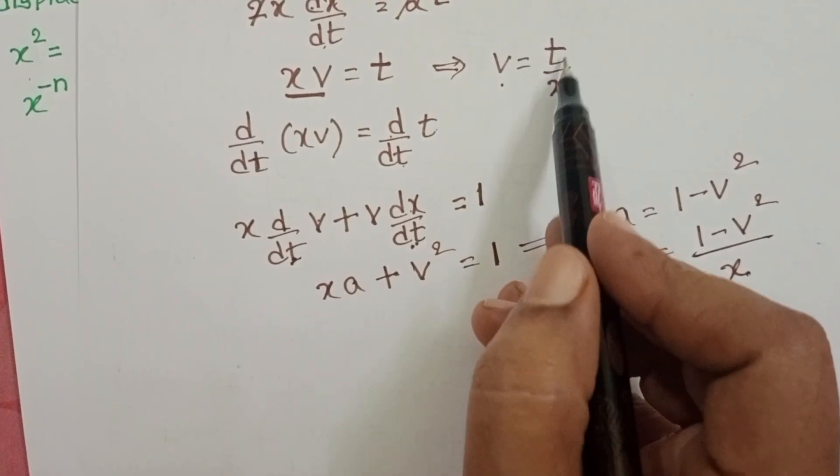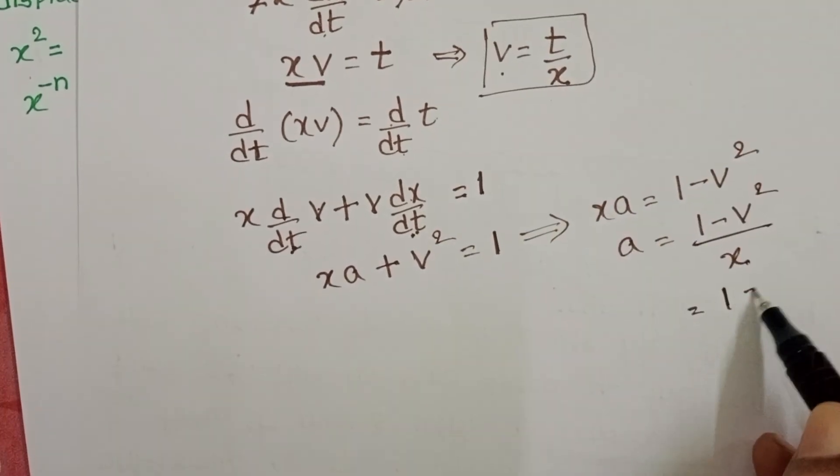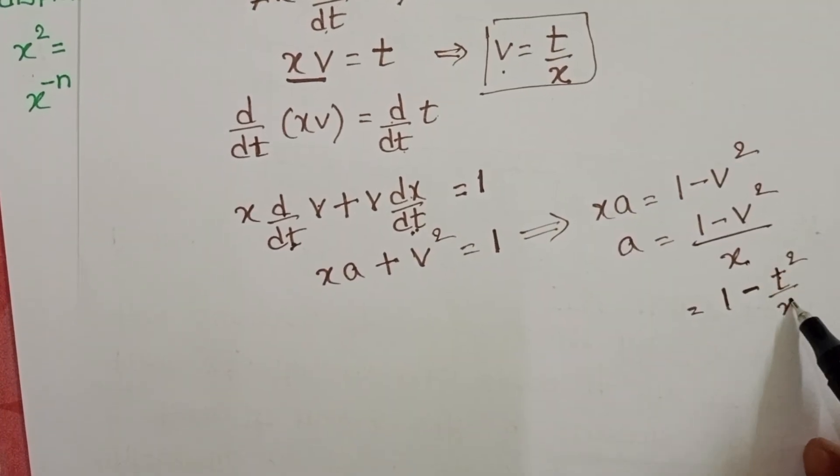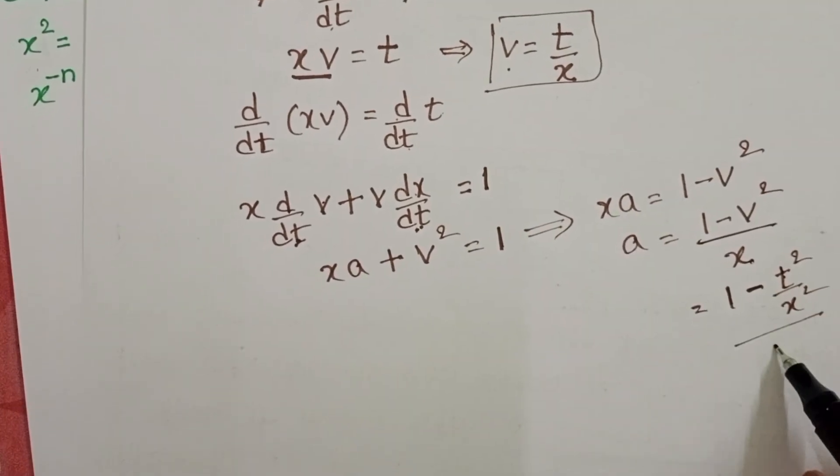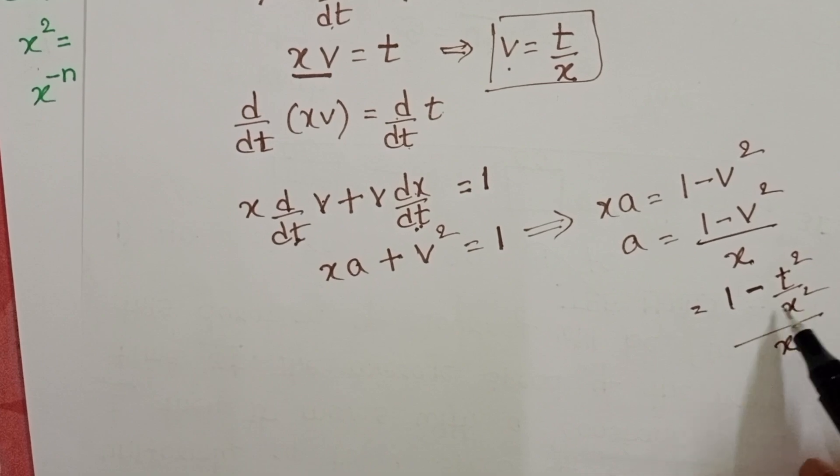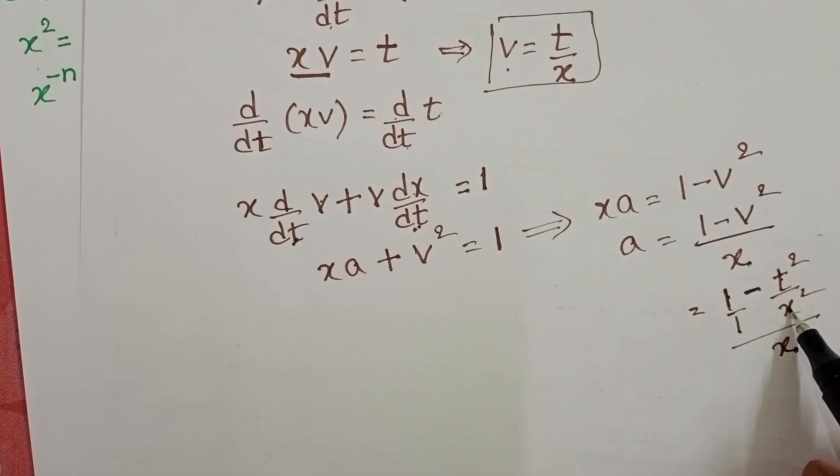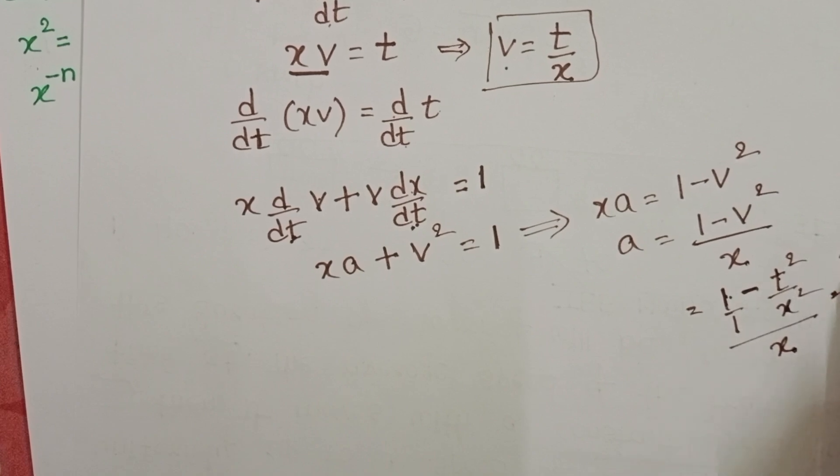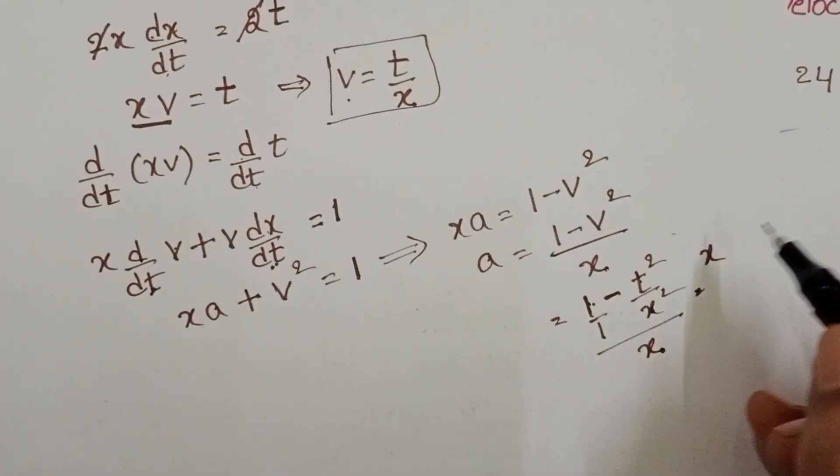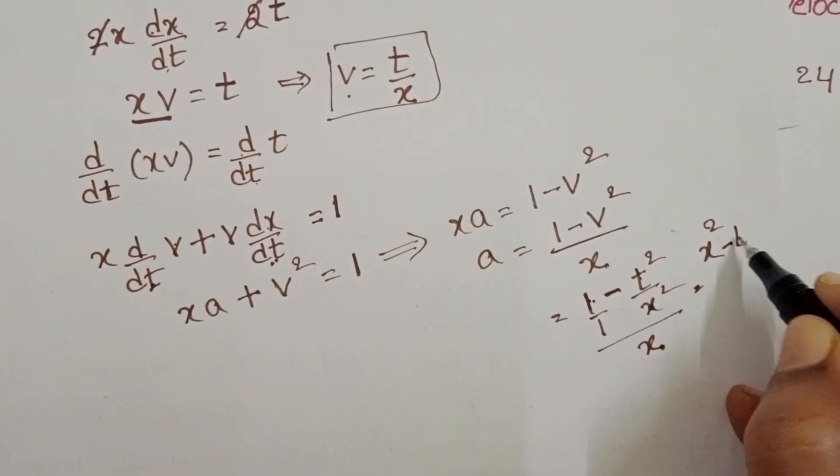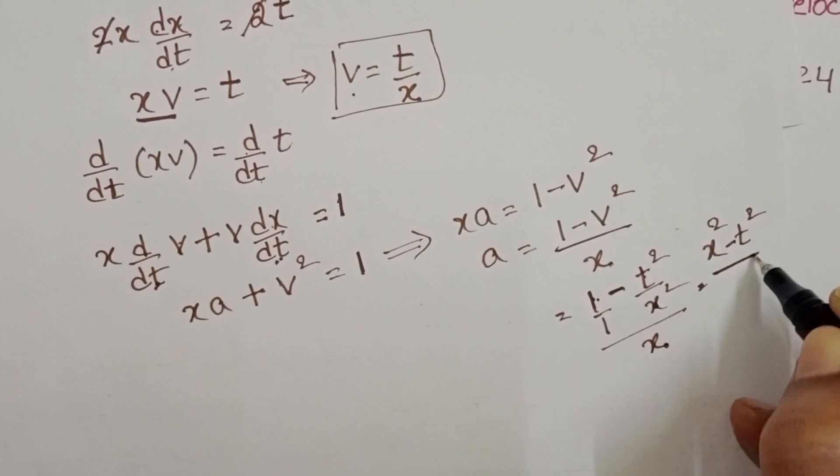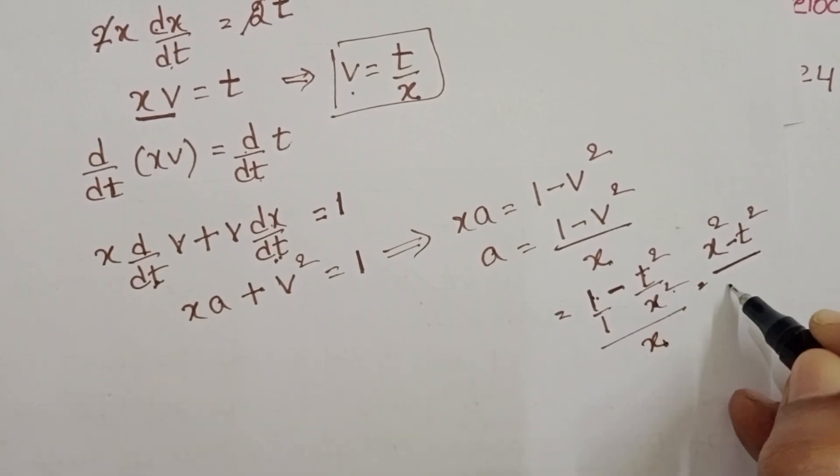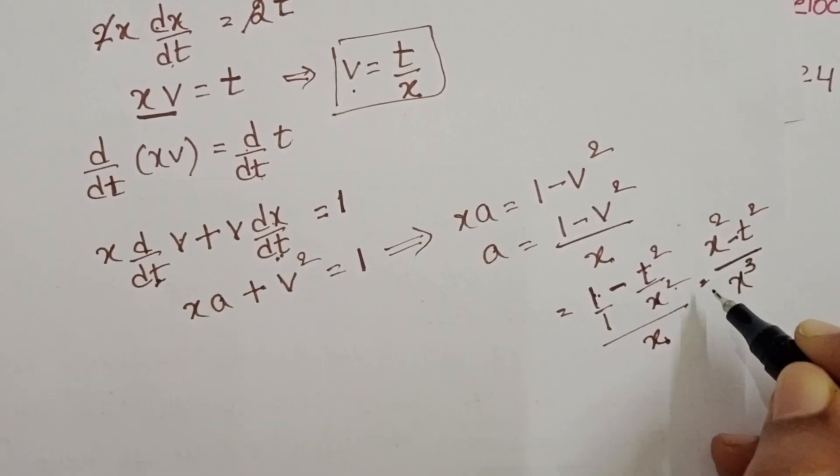v = t/x. So a = (1 - t²/x²)/x = (x² - t²)/x² divided by x, which becomes (x² - t²)/x³.